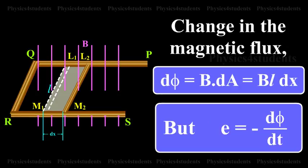Change in the magnetic flux dΦ is equal to B into dA is equal to BL dx.